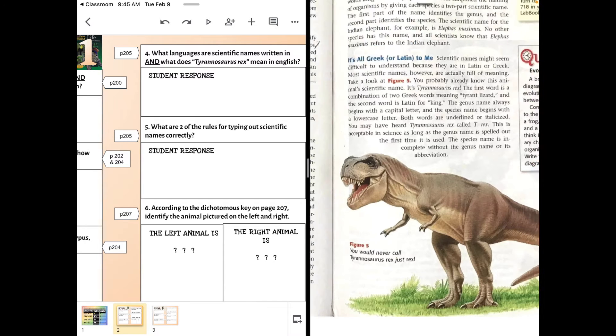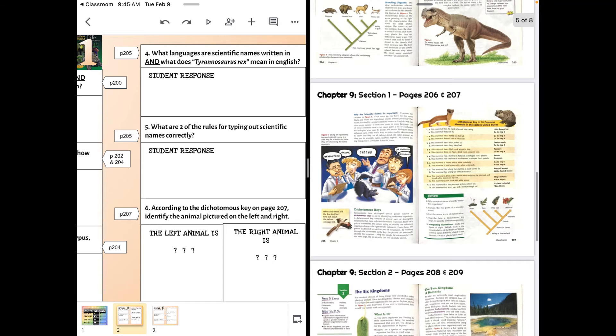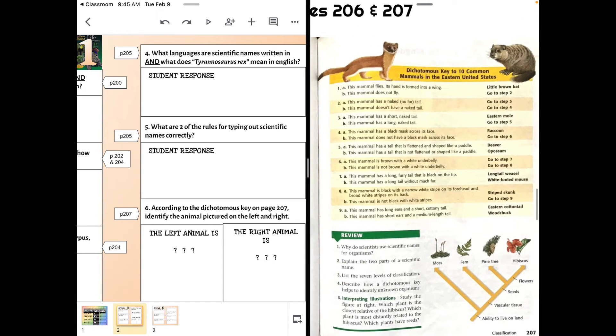And then lastly there's this thing called a dichotomous key. In a dichotomous key, you go through the steps and I'll take you through the one on the right. You go through the steps and you answer the questions. One of the questions has to be true.